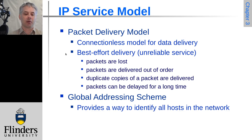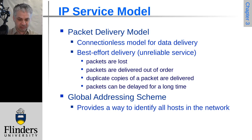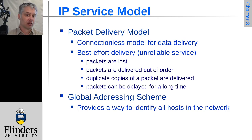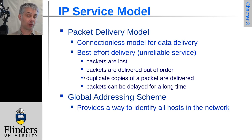Being connectionless and best-effort means packets might get lost due to transmission errors or lack of buffering. Packets might be delivered out of order because they take different routes or are handled in buffers non-sequentially. You might even receive more than one copy of a packet — either because an acknowledgment was lost triggering a retransmission, or because a router sends a packet down two different routes simultaneously to improve latency for the end user.